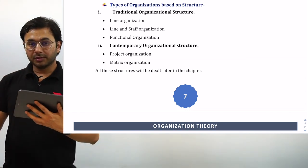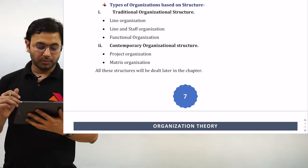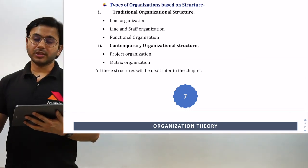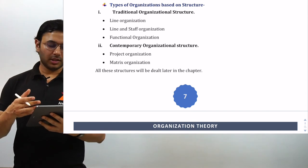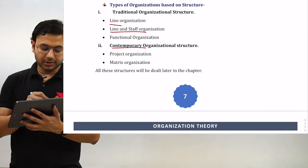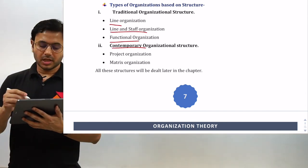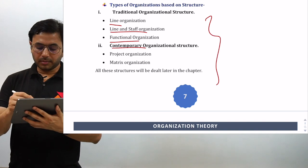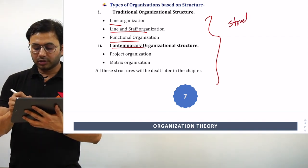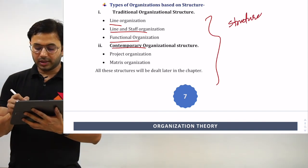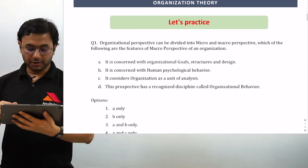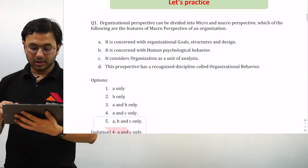Based on structure, organizations can be traditional or contemporary. Traditional would be line, line and staff, or functional. We will be talking about this in detail with enough examples when we discuss structures in organization.